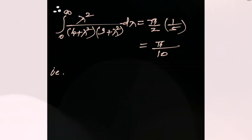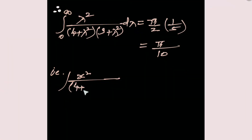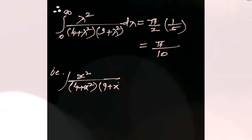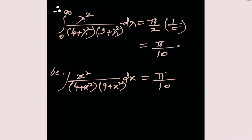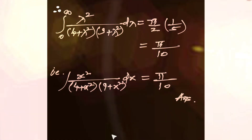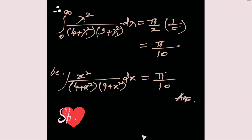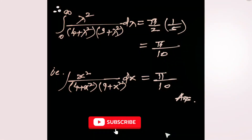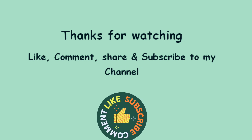Since it is a definite integral, replacing lambda by x, we get the integral from 0 to infinity of x² upon (4 + x²)(9 + x²) dx equals π/10. Please like my video, share it, subscribe to my channel, and press the bell icon to receive notifications. Thank you and thanks for watching.